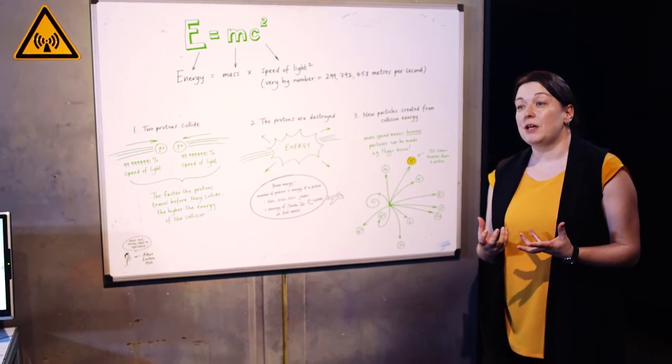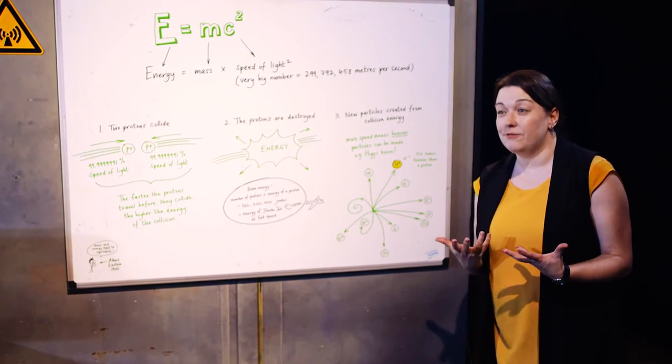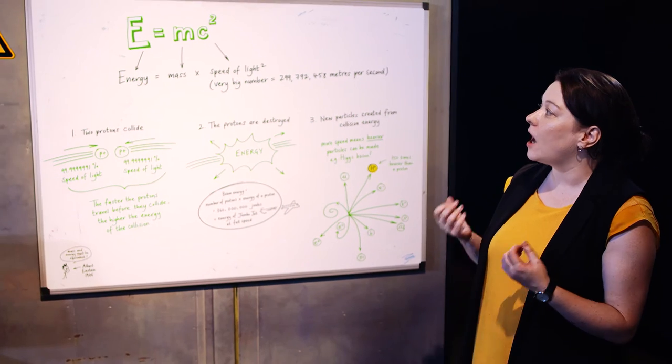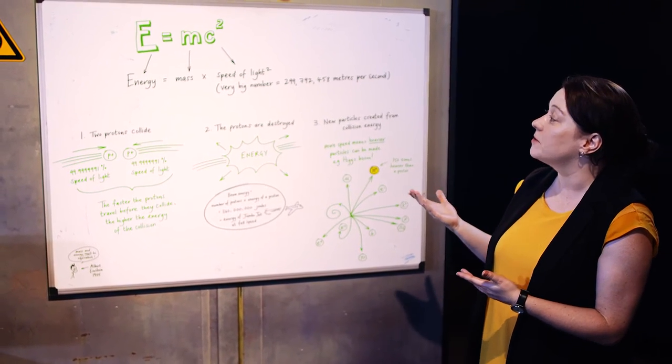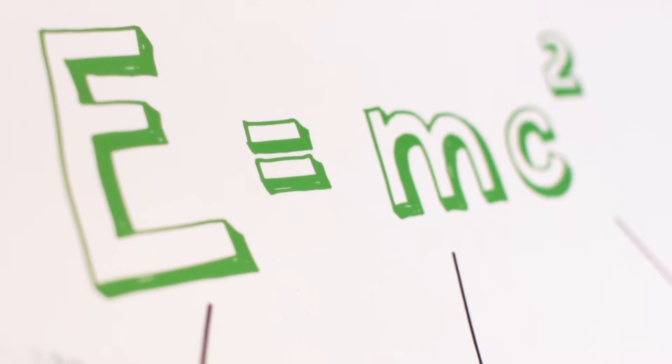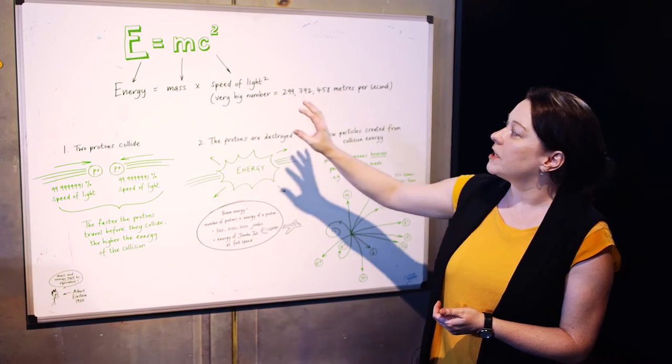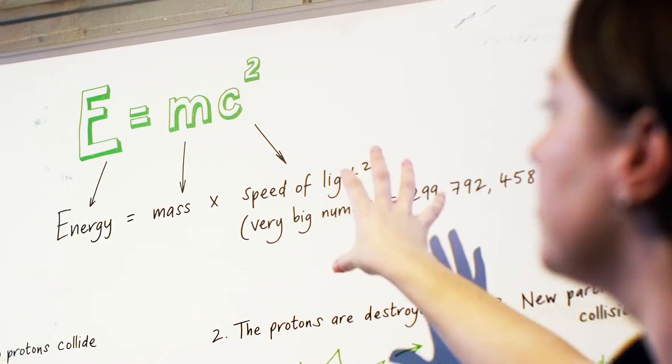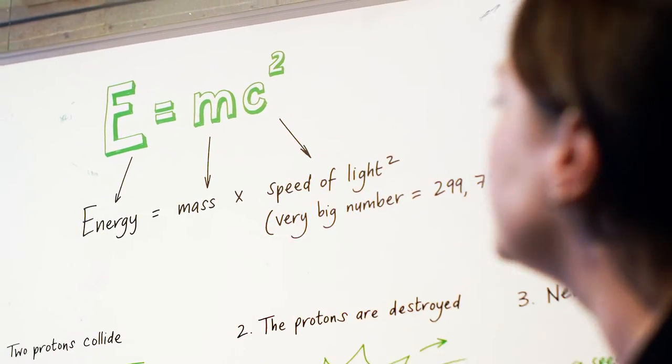The LHC needs to make particles go really fast. Why does it need to do that? That's where an equation comes in - a famous one: Einstein's E=MC² equation. What Einstein essentially said was energy and mass are the same thing, and they're related by speed.